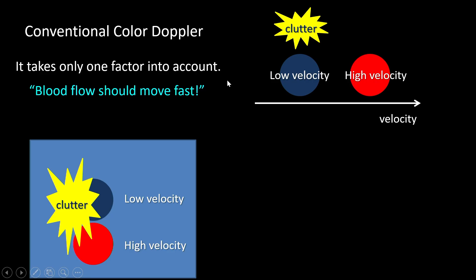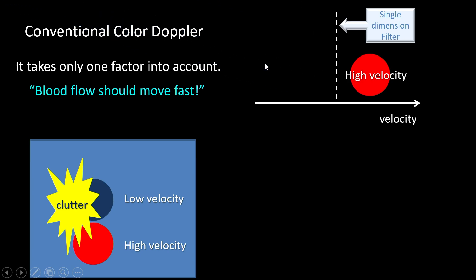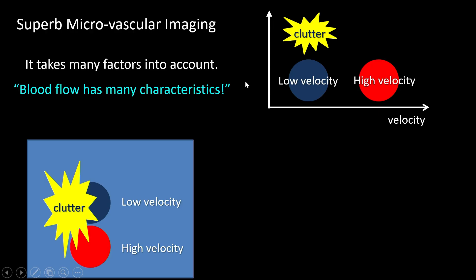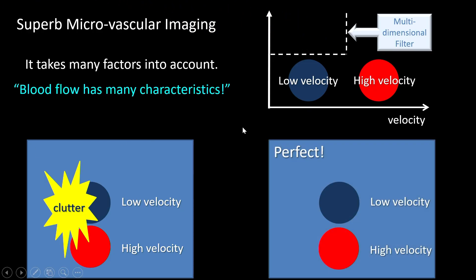The superiority of SMI lies in its filter. Conventional color Doppler uses a high-pass single-dimension filter that only takes velocity into account, eliminating blood flow signals with low velocity — so we can only see high-velocity vessels. SMI employs a multi-dimensional filter taking many factors into account, eliminating only clutter, so we can appreciate blood flow signals with both low and high velocity.